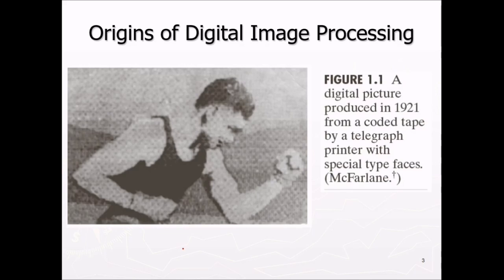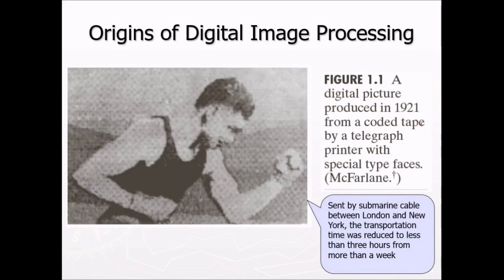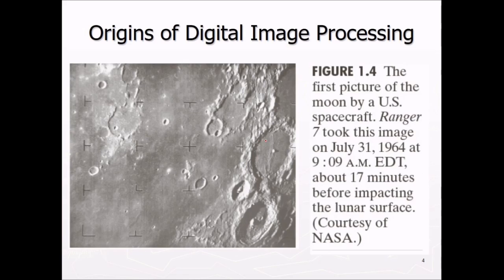These are the origins of digital image processing log back history 1921. This is a digital picture produced in 1921 from a coded tape by telegraph printer with special type faces. This was sent by submarine cable between London and New York. The transportation time was reduced to less than three hours from more than a week. This is the first picture of the moon by US spacecraft Ranger 2 took this image on July 31, 1964, about 70 minutes before impacting the lunar surface.